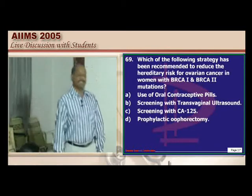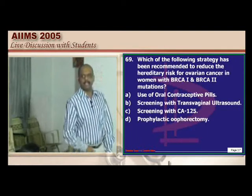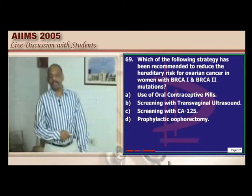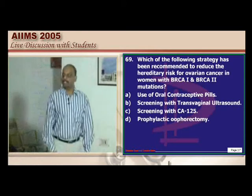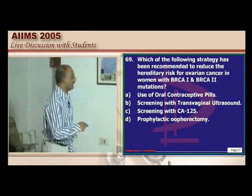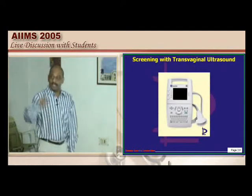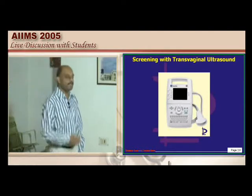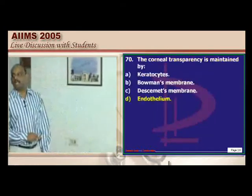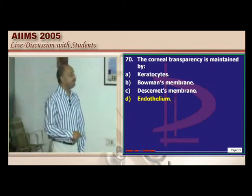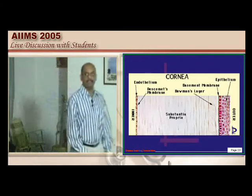A woman with BRCA1/BRCA2 mutations — how do you screen for ovarian cancer? BRCA1 and BRCA2 are important for breast cancer and other genitourinary cancer screening. The most important protocol is regular screening with transvaginal ultrasound, which is what needs to be remembered and underscored.